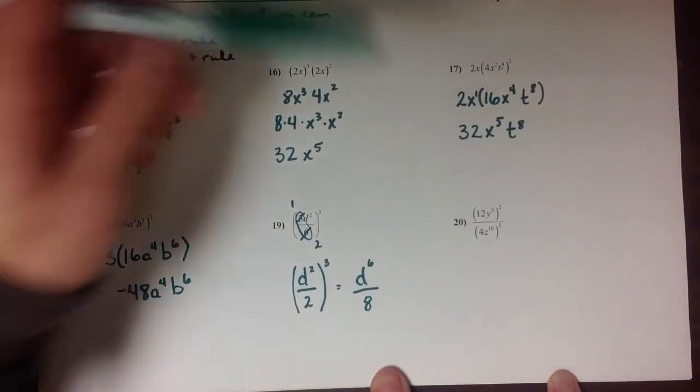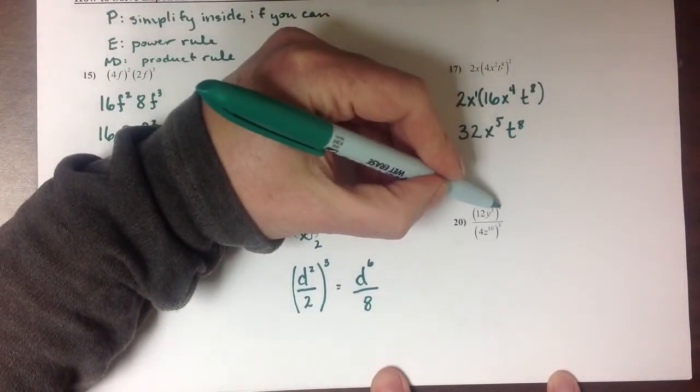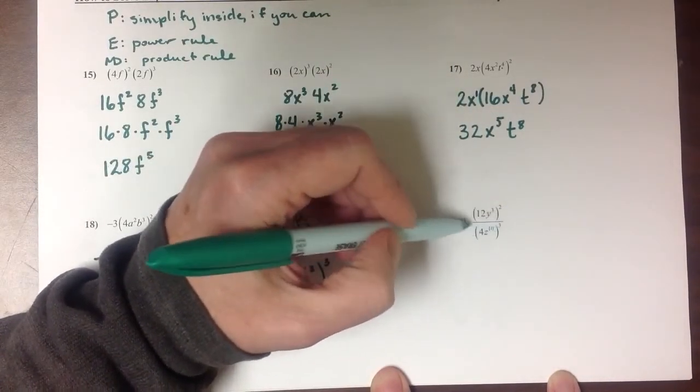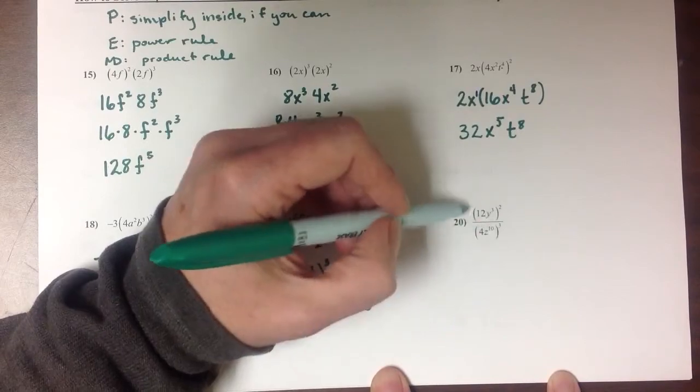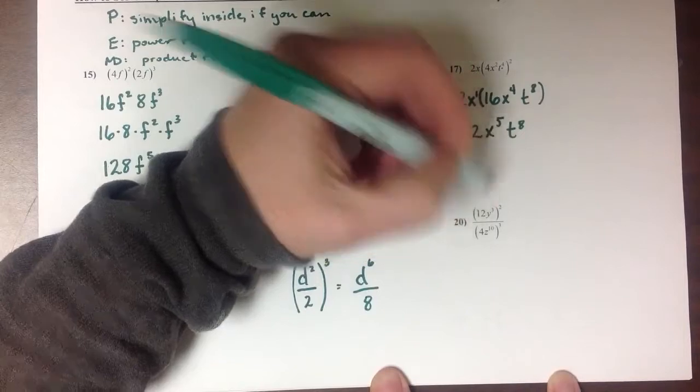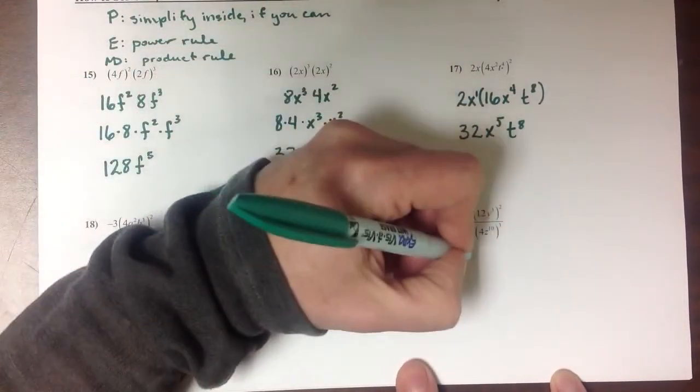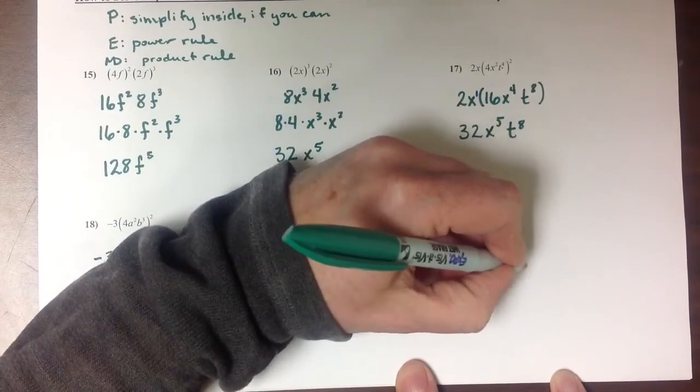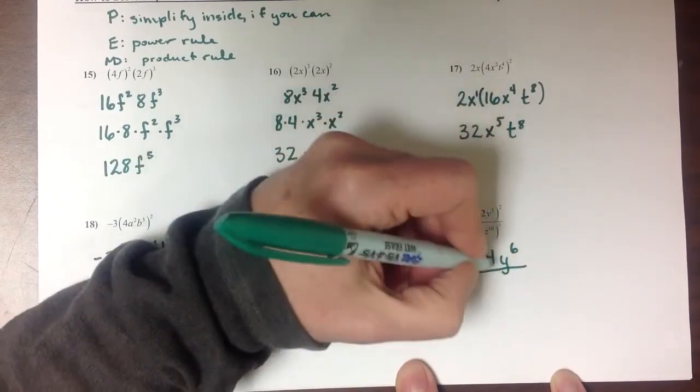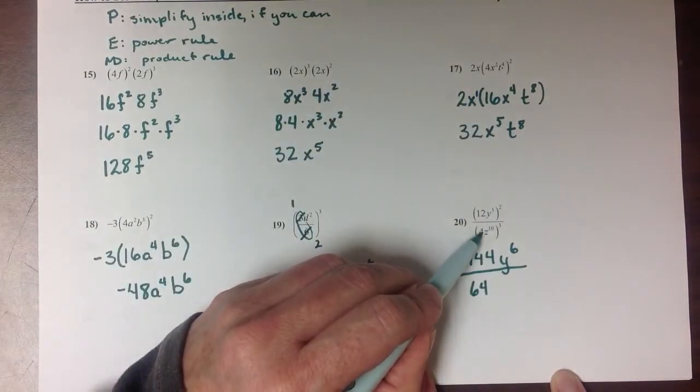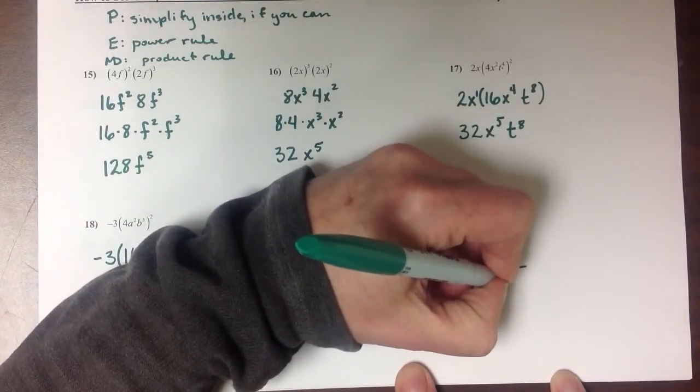Our final example on this page has us doing some distributing first because we do need to do exponents before we can do division since this division is not contained within one large set of parentheses. I'm going to distribute the 2 inside the parentheses first, giving me 144 y to the 6 over 64, because 4 times 4 is 16 times another 4 gives me 64, z to the 30th.